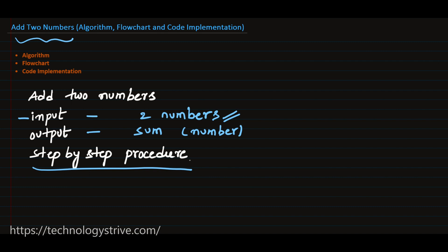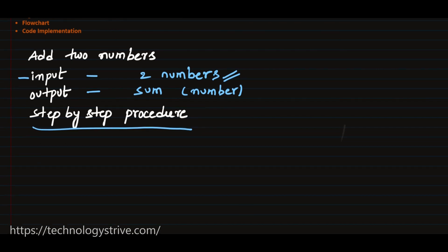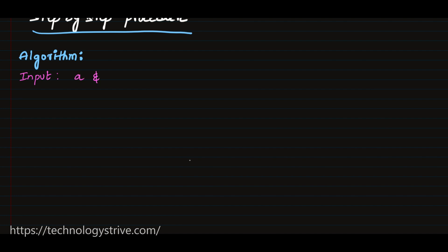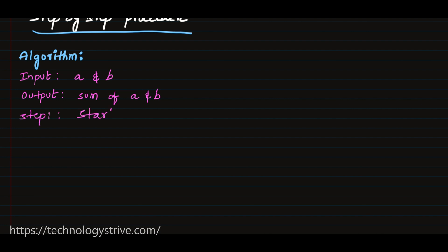So let's write the algorithm. The input is two numbers a and b, and the output is a number represented as sum, produced by adding these two numbers. Step one is always to start the algorithm. Step two: to get the sum we need two integer values, so we read the two values a and b.